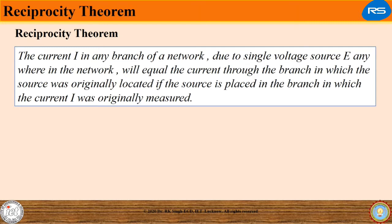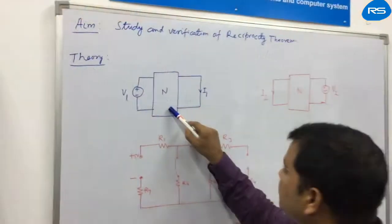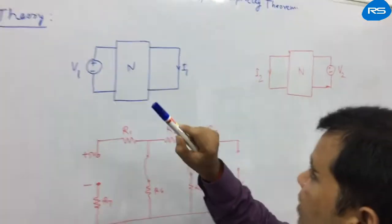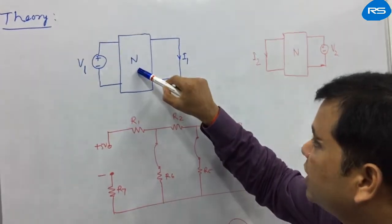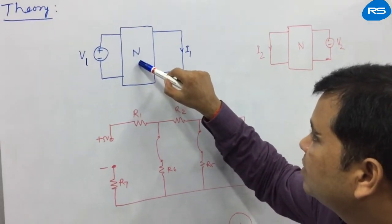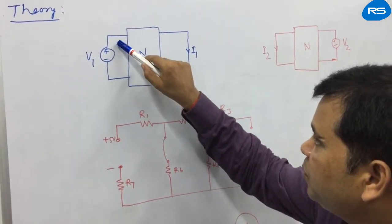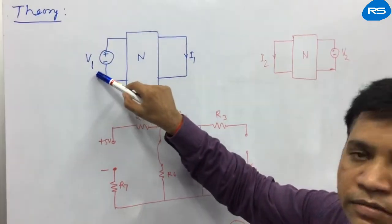Let us understand this. We have a given network having a number of network elements inside it. The input port is connected with voltage source E, and across the output we have measured current equal to I.